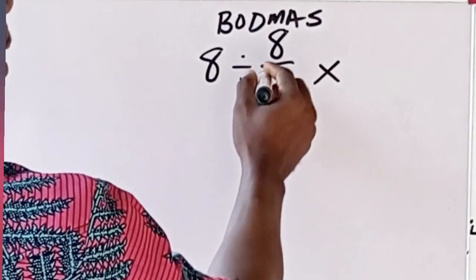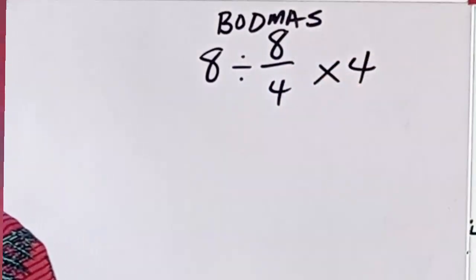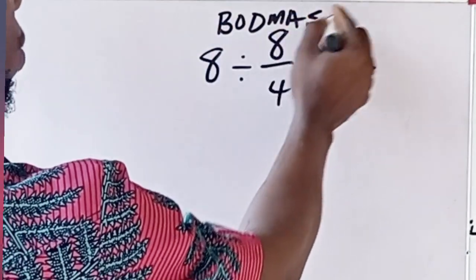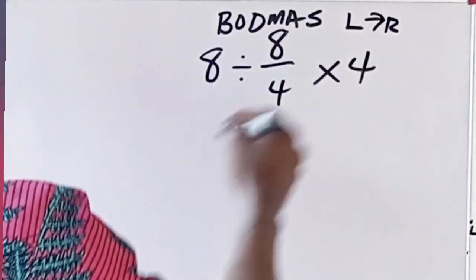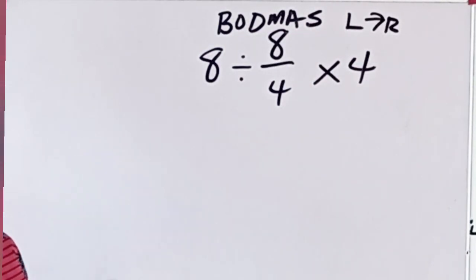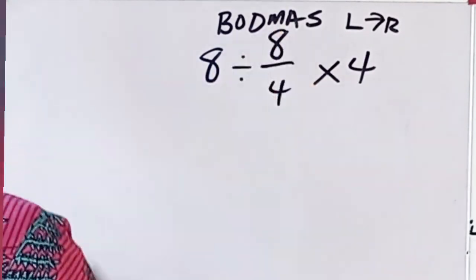First of all, the rule says that we have to solve this from left to right, following the rules from left to right. It means that we are going to do this division first before the multiplication.